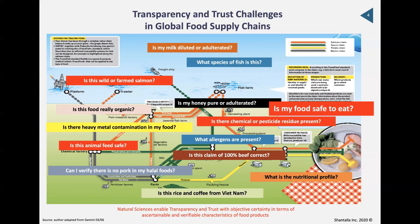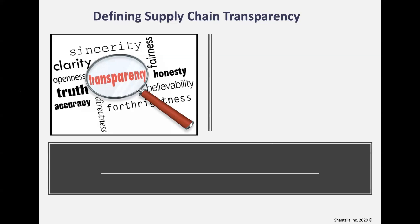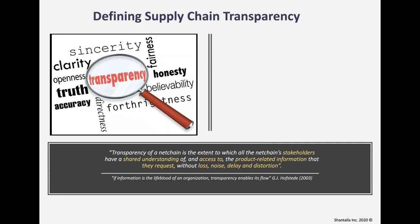On transparency itself — it's about sincerity, clarity, honesty, believability of the data, and accuracy. My favorite academic is Kurt-Jan Hofstede, a professor at the University of Wageningen in Holland, whose father Kurt Hofstede is famous for cultural studies in the 1980s. Professor Hofstede talks about a 'net chain' — a network and a supply chain combined.